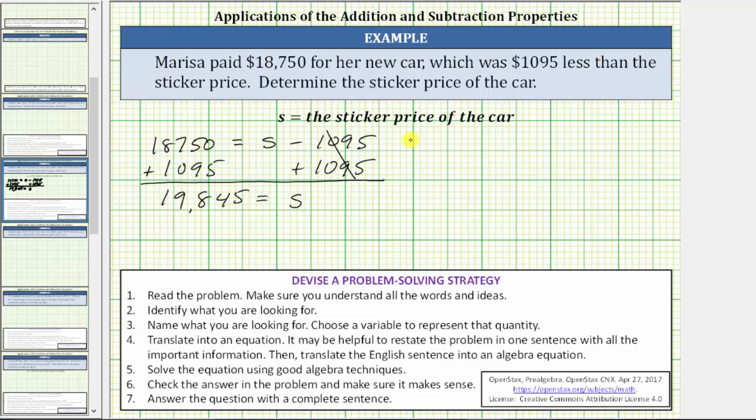Performing the substitution gives us $18,750 equals $19,845 minus $1,095. Simplifying the right side, we do get $18,750. $18,750 equals $18,750 is true, verifying the solution is correct.